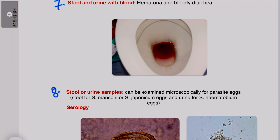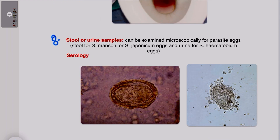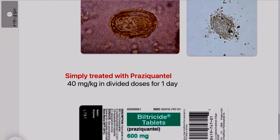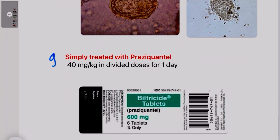The eighth S is for stool and urine examination for diagnosis. Stool can be examined for parasite eggs in cases of S. mansoni or S. japonicum infection, whereas urine examination is required for S. haematobium eggs. If these samples do not give a definitive diagnosis, serology may also be required.